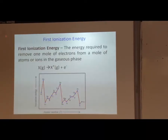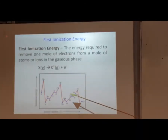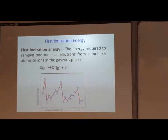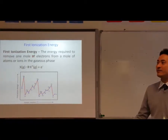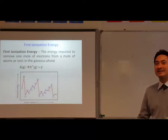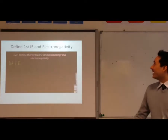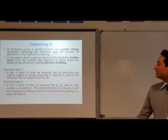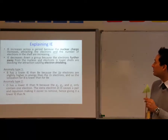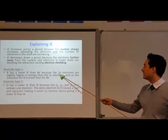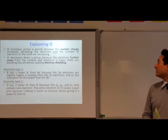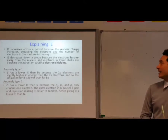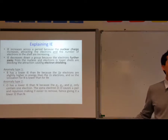First ionization energy — we did this in topic two, so if you're not familiar with it, go listen to topic two. The anomalies between jumping between the P sublevels involve mutual repulsion, and within the sub-level when you go from 2S to 2P. You have to use the words nuclear charge, electron shielding, and distance — write those words exactly in your answer every single time. Use the technical terms; it's the only way to guarantee you'll get the right answer when explaining it.